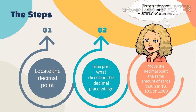Dear students, is this the same direction as multiplying a decimal? No. Every time in division, the decimal point goes to the left — it is the opposite of multiplying a decimal. So in division, the decimal point goes to the left. Let's understand with the help of some examples.